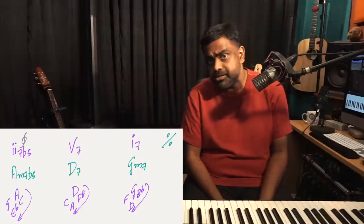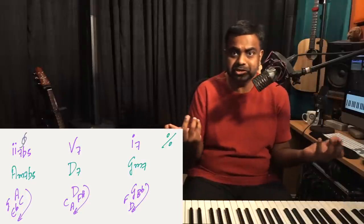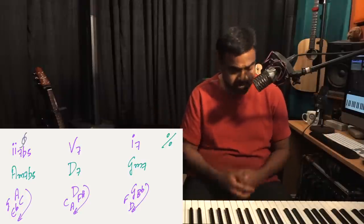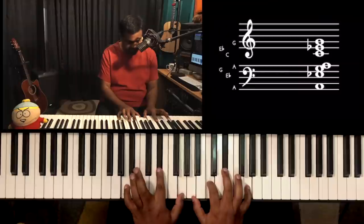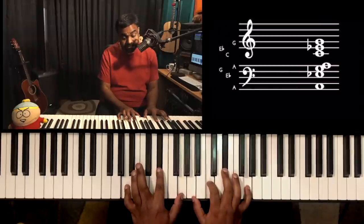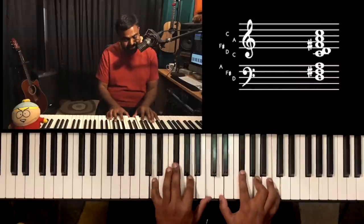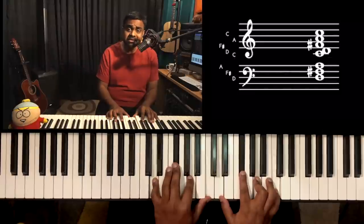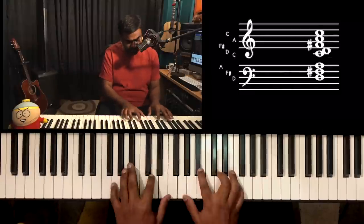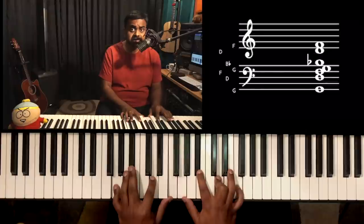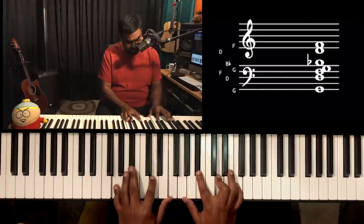In some jazz progressions they actually combine the major 2-5-1 and the minor 2-5-1 — both sort of happen together. So doing the whole minor thing: A minor seventh flat five → D dominant seventh → G minor seventh.